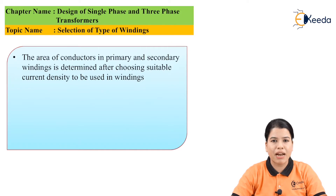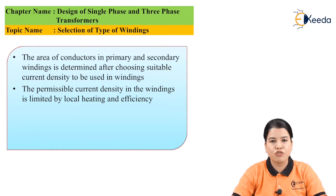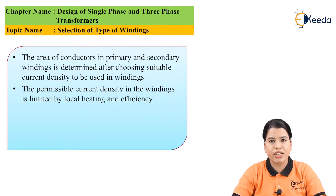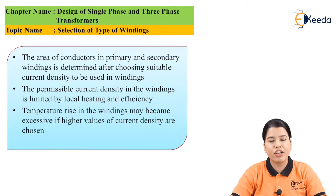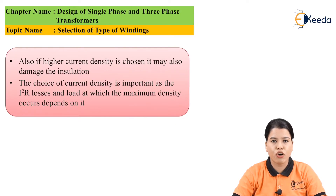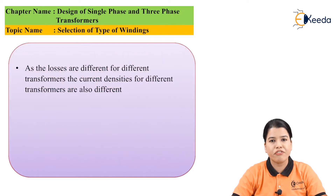The area of the conductor of the primary and secondary winding mainly depends upon the value of current density. The permissible current density of the winding should be selected depending upon the value of current. This current density will also affect the losses as well as the rise in temperature. If a higher value of current density is chosen, the temperature rise in the winding will be very high, and it can damage the insulation. Also, the I²R losses depend upon the value of current density. Since losses differ across transformers, the current density values will vary from one transformer to another.